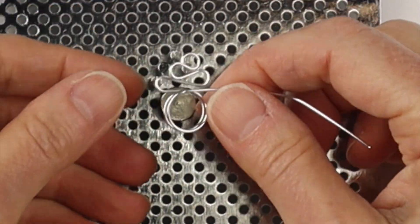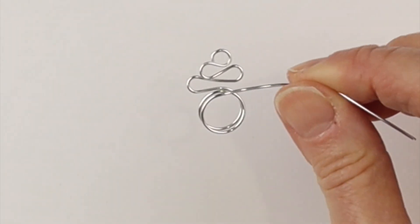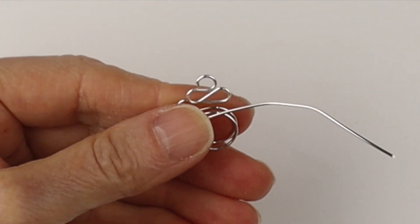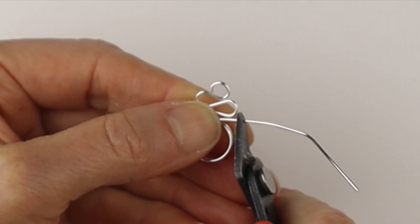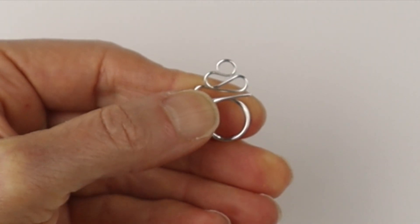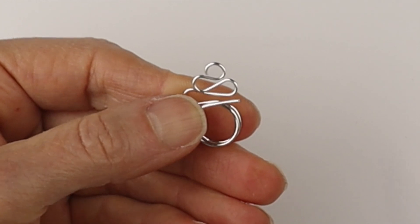So turn it around about twice, lift it off the jig and then we are going to clip it a little beyond the circle there. Depends on how big you want to make your spiral.